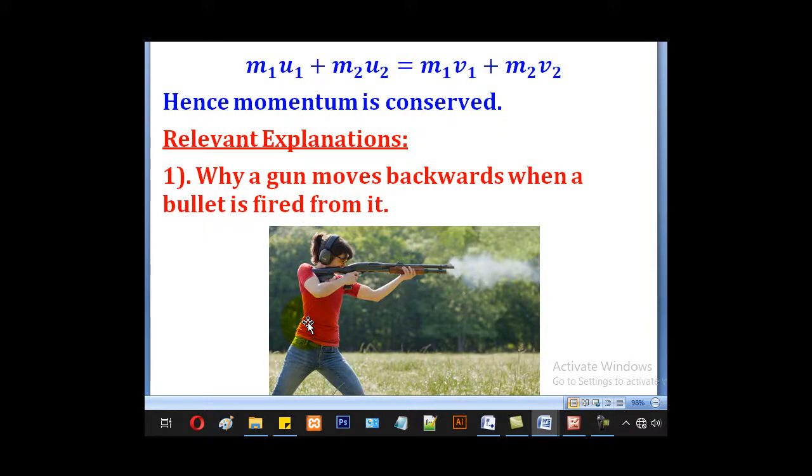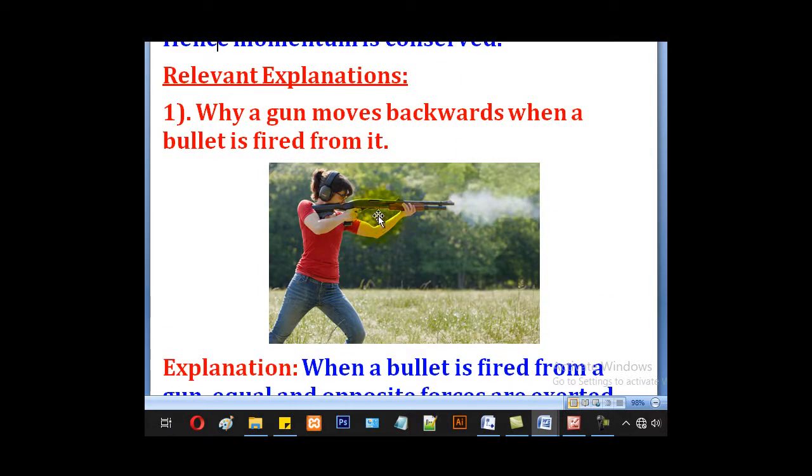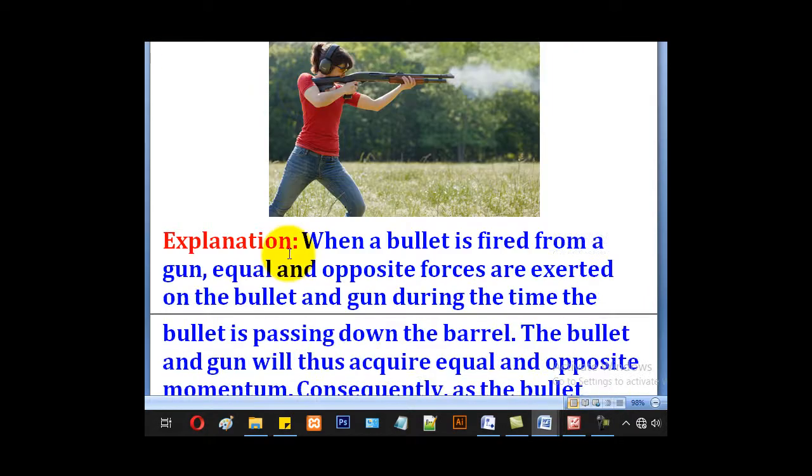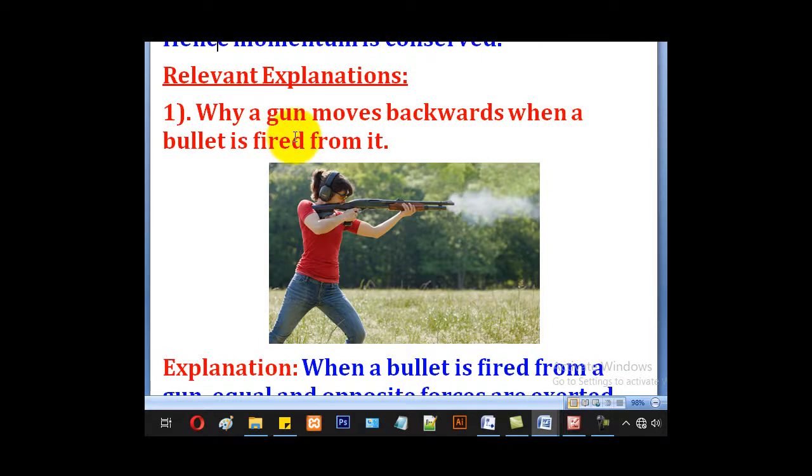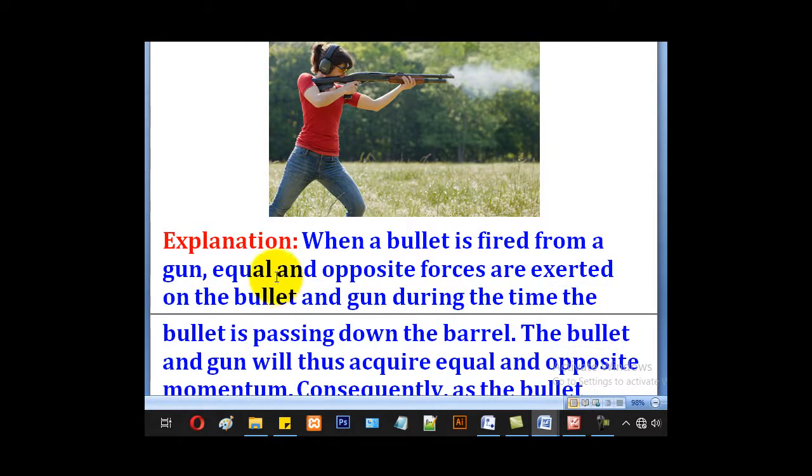Now this principle can also be used to explain some observations. And one of the observations is why a gun jerks backwards when a bullet is fired from it. So this is the gun. A bullet is fired, this gun will jerk backward. And Newton's and the principle of conservation of linear momentum can help us to explain that.